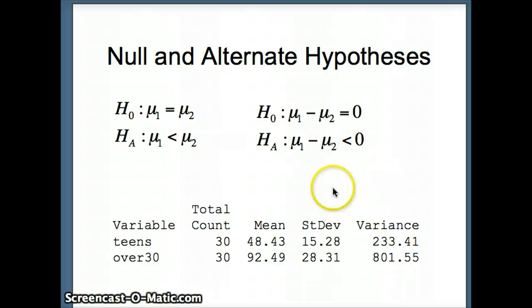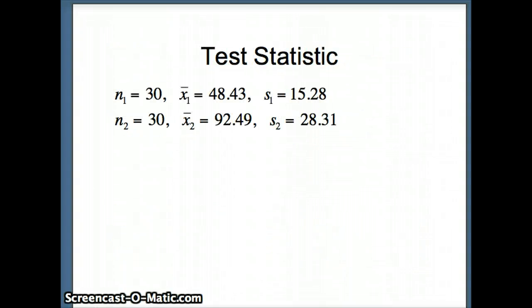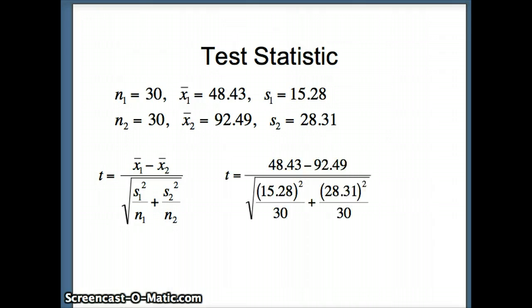Now we're going to find the test statistic. There's our relevant data and there is the test statistic: x1 bar 48.43 minus 92.49 divided by s1 squared 15.28 squared over n1 over 30 plus s2 squared 28.31 squared over n2 also over 30. We will quickly do this using Excel.